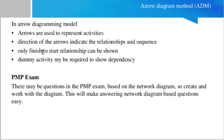The next diagramming method is arrow diagramming method ADM. In the arrow diagramming method, arrows are used to represent activities. Direction of the arrows indicates the relationships and sequence. Only finish to start relationships can be shown. Dummy activity may be required to show the dependency.